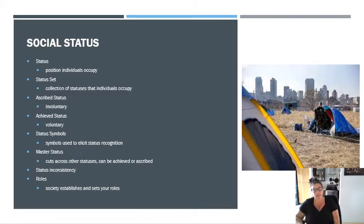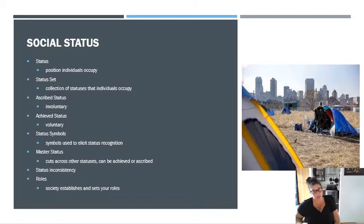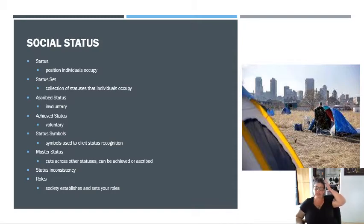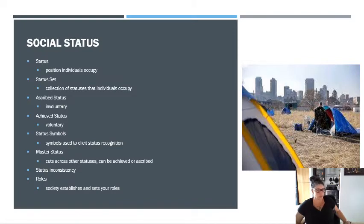Your master status is the status that cuts across all other statuses. You often don't have control of this. Normally this status is going to be one where you're in the subordinate group, not in the dominant group. For example, if I'm a white male doctor but I'm in a wheelchair, not being able-bodied would be a master status — because you're the doctor who is in a wheelchair. Whether you go to the grocery store, whether you're at work, whether you're at home, you're always that person in the wheelchair. It cuts across all of your other statuses.